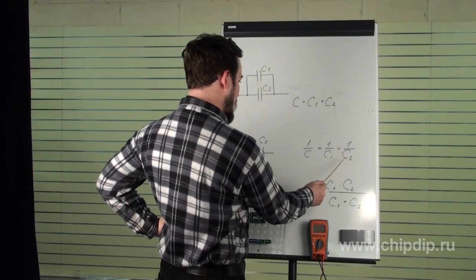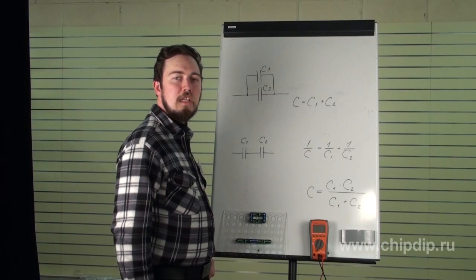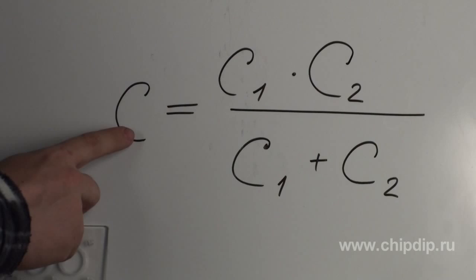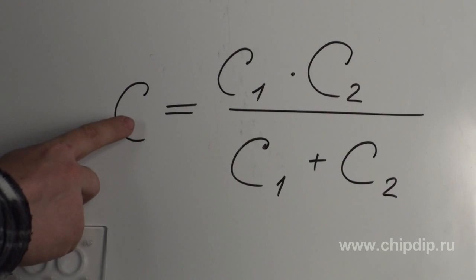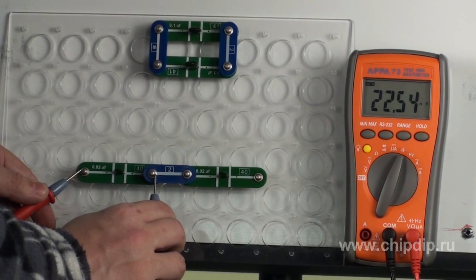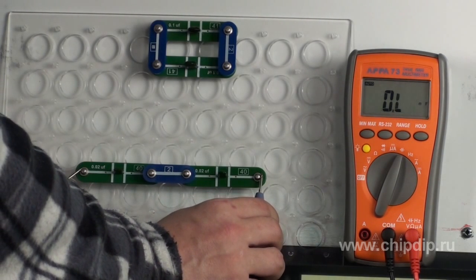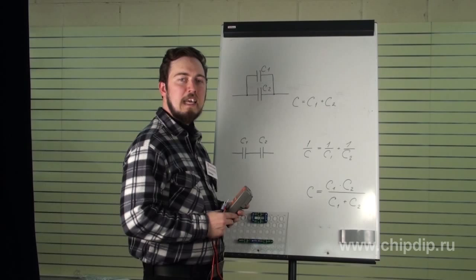Let's look at the example with two capacitors: C equals C1 multiplied by C2 divided by C1 plus C2. If two capacitors with the same capacitance of, say, one microfarad are connected in series, their total capacitance will be equal to half the capacitance of one capacitor — that means 0.5 microfarad. In the case of series connection, the possibility of breakdown is lower, because each of the capacitors is subjected only to a part of the potential difference of the power supply source.